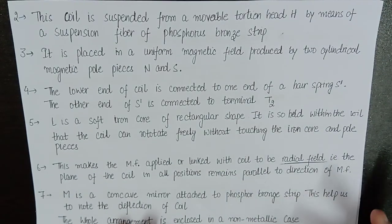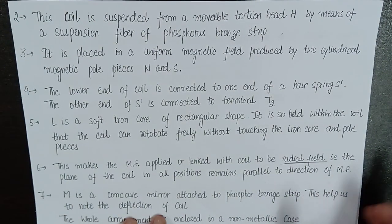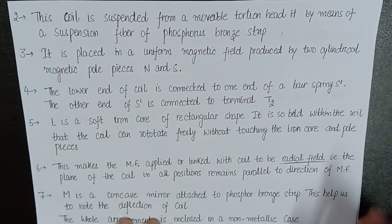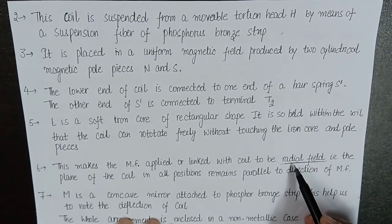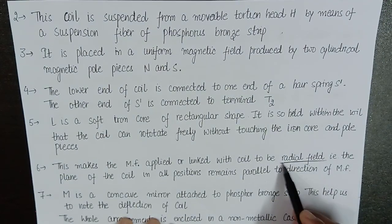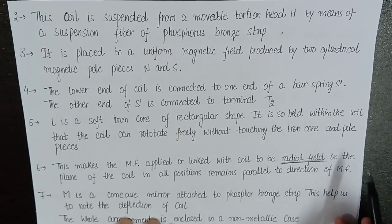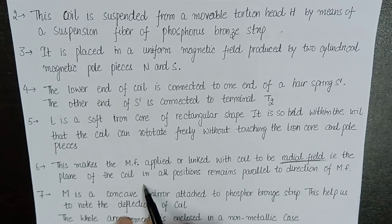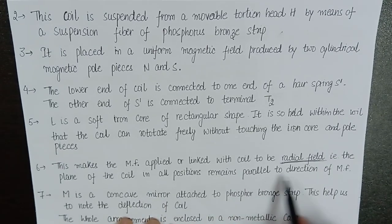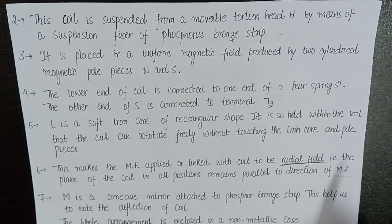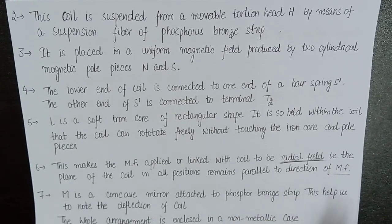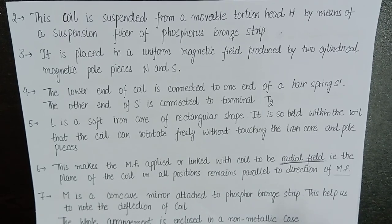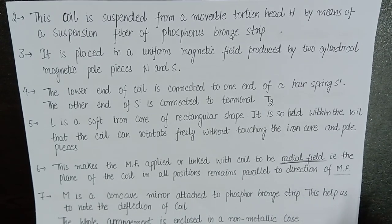It is so held within the coil that the coil can rotate freely without touching this iron core and pole pieces. So this iron core function is again making the magnetic field radial. What is radial? We talk about radial field, which we have put in soft iron core like this. The coil moves from the magnetic field to the pole pieces.